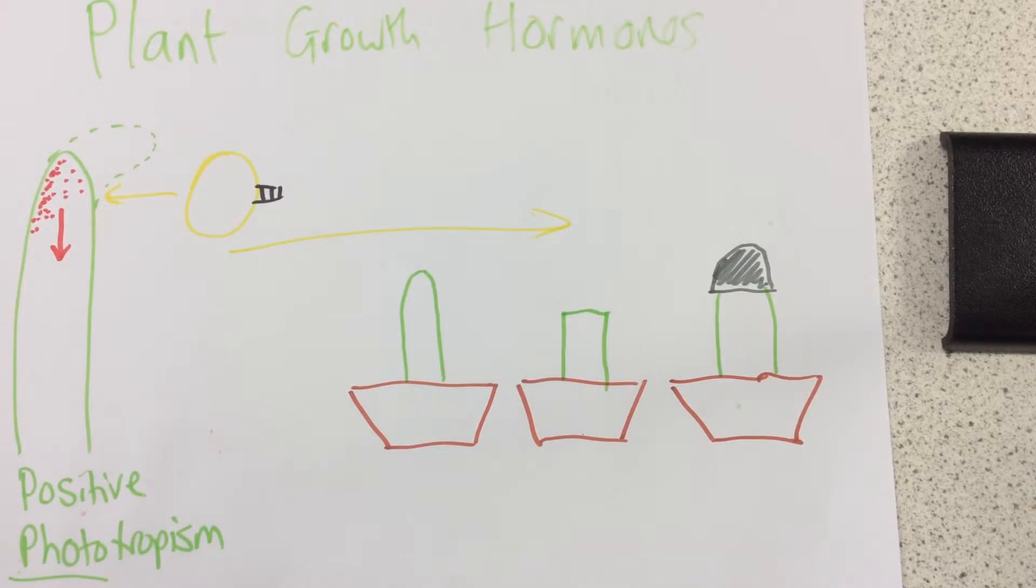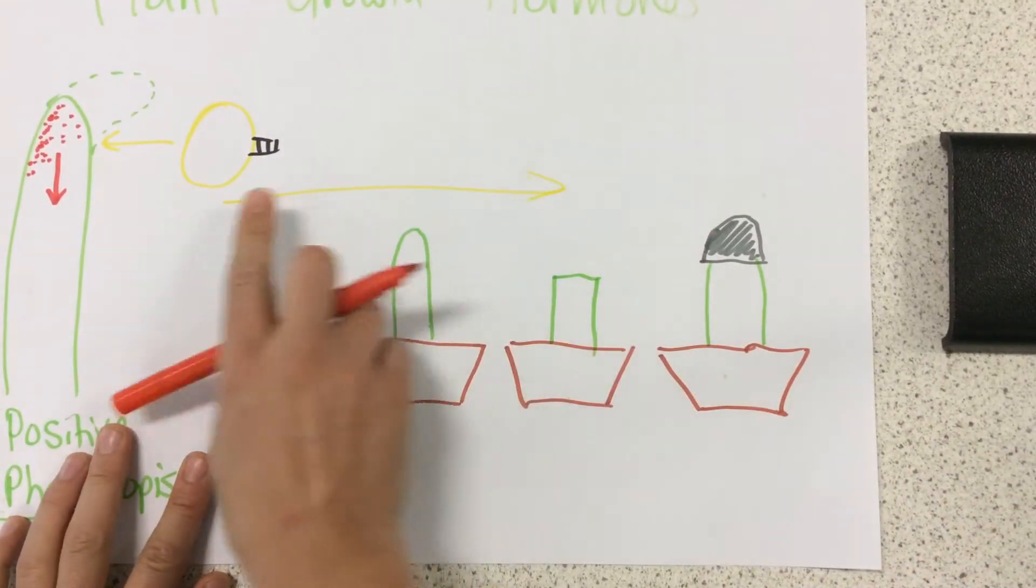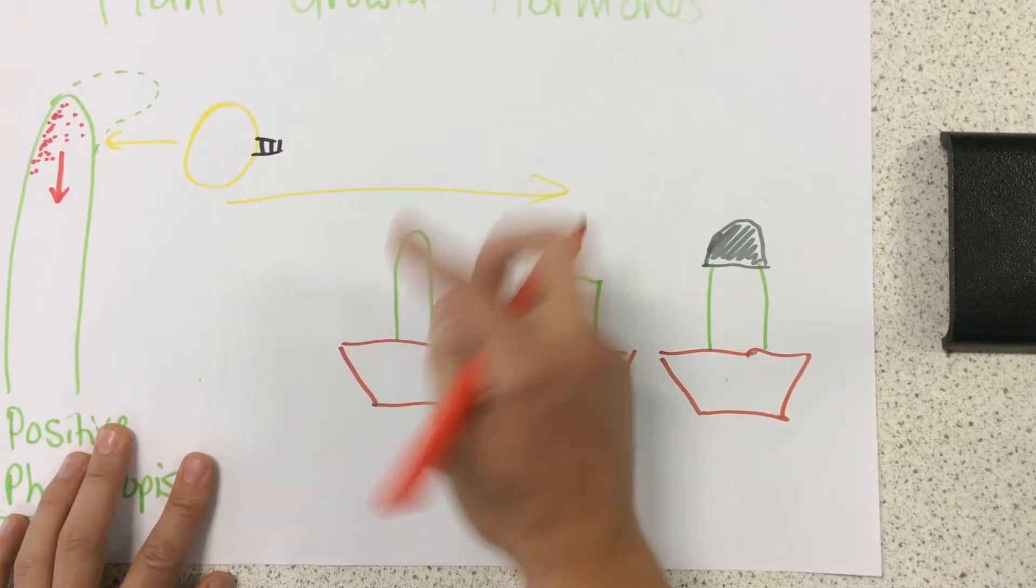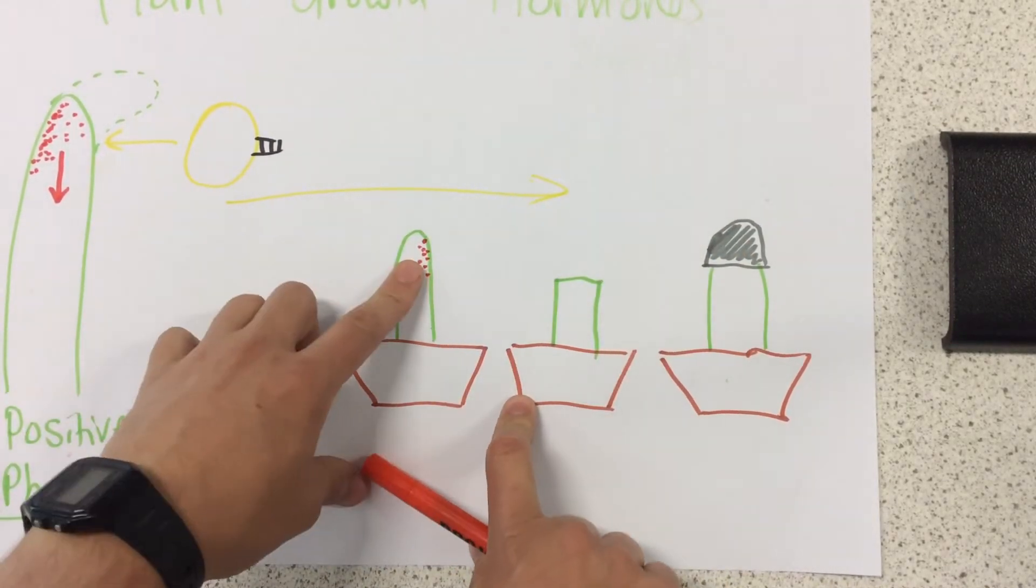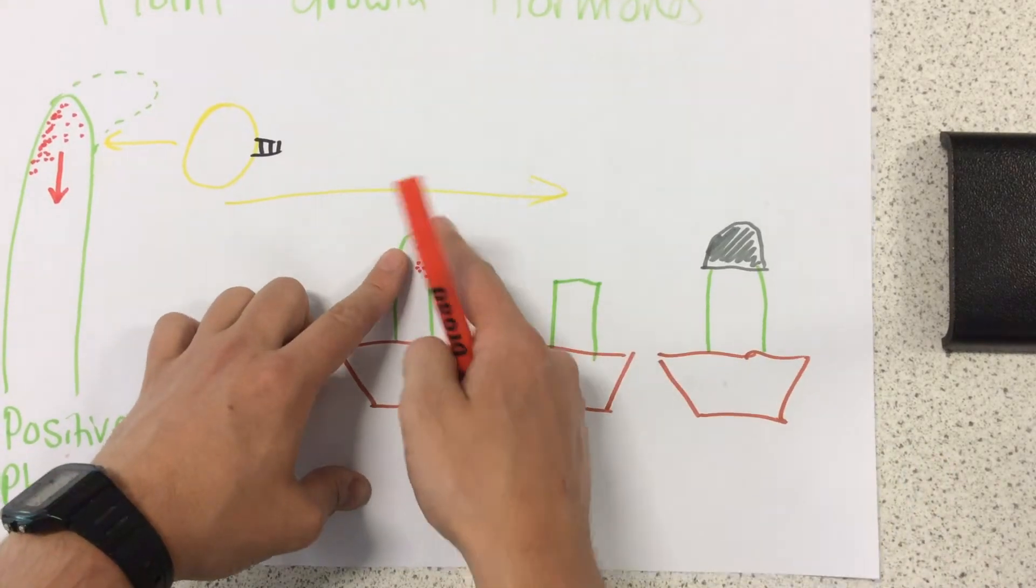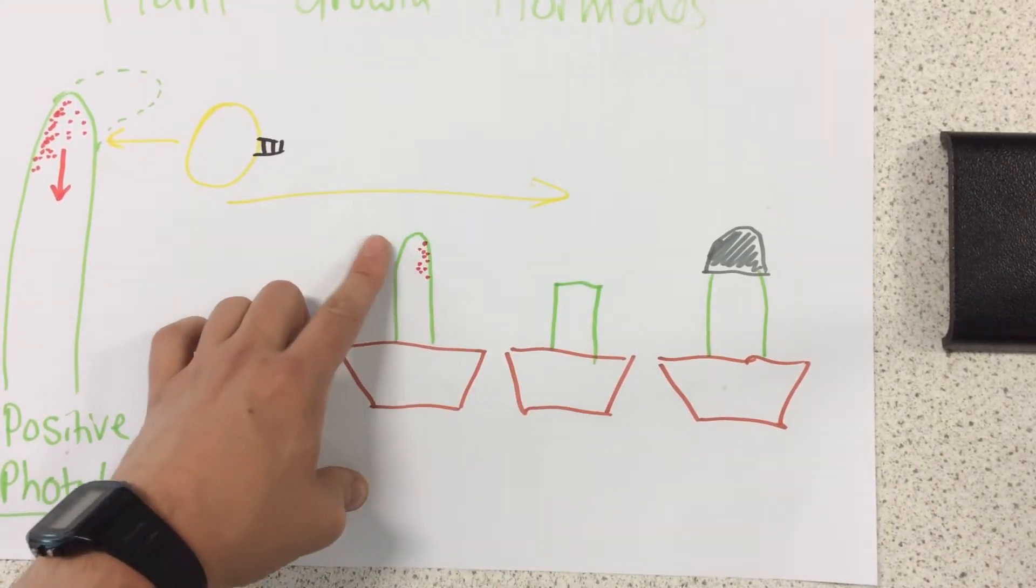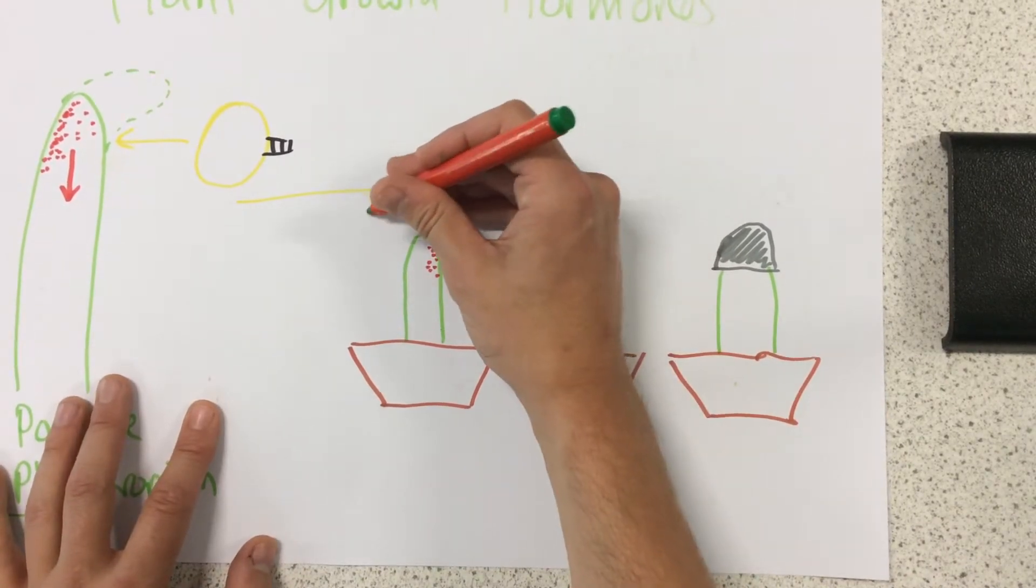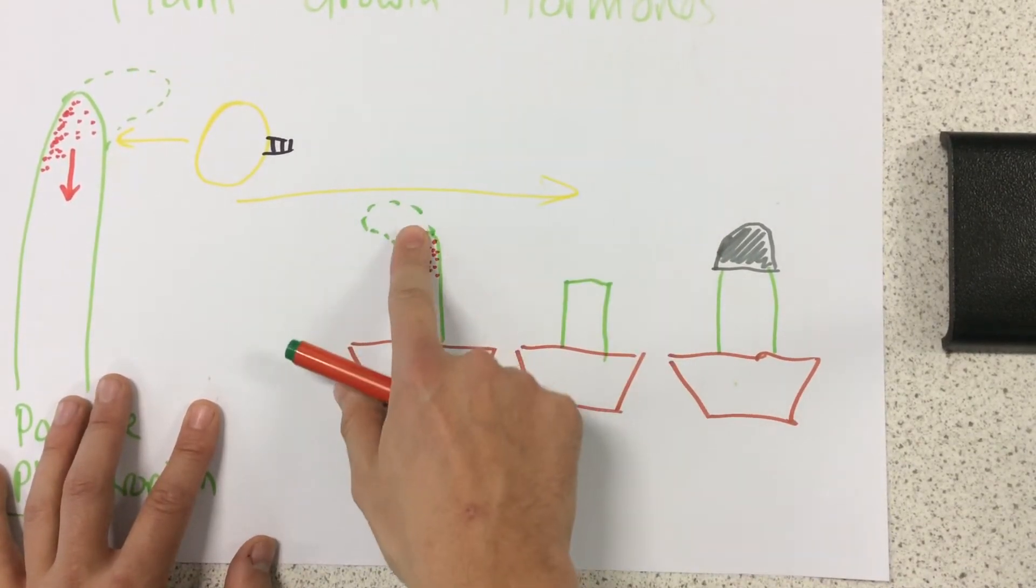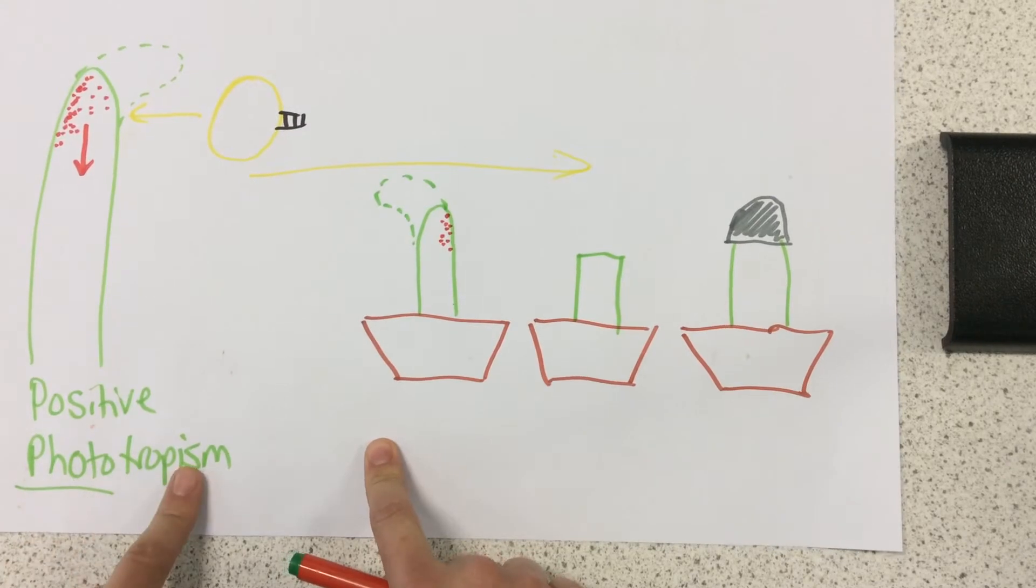So what would happen to this one on the left is the light would break down the auxins on this side, so we'd have an accumulation of auxins on the dark side. That would cause this side to grow quickly and this side to grow slowly, which means this one would start to grow towards the light. Positive phototropism.